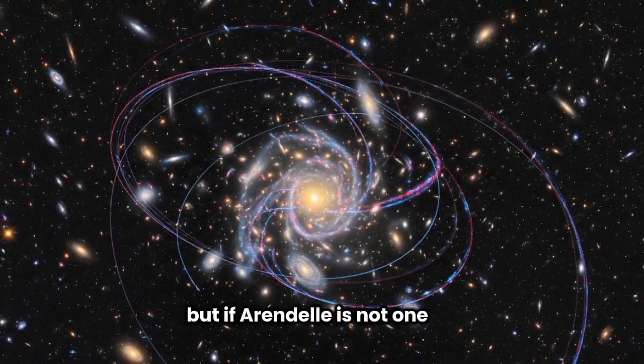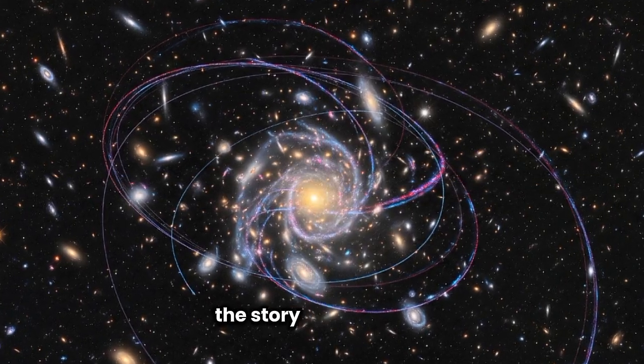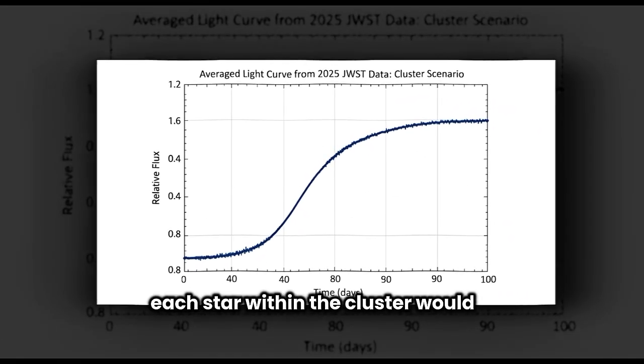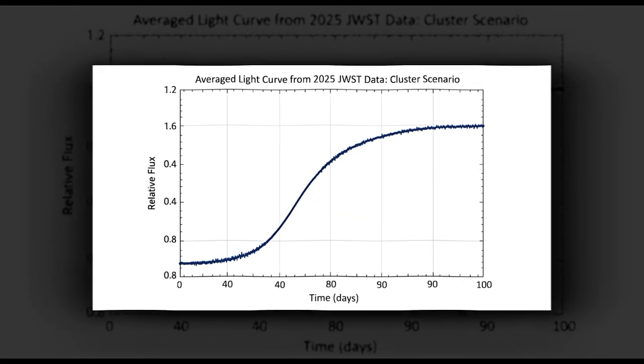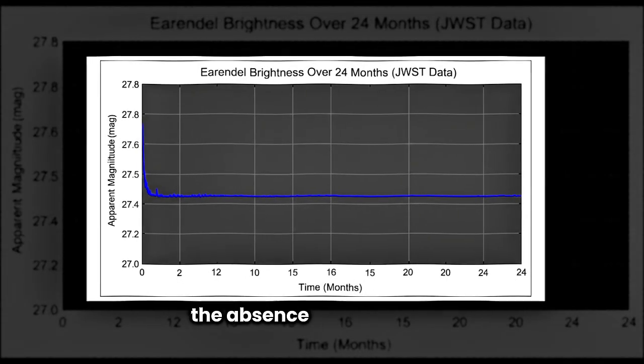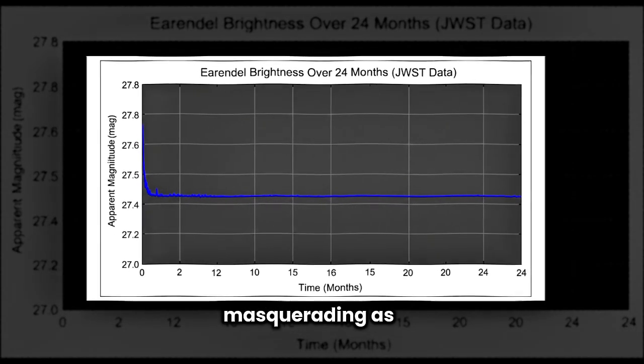But if Earendel is not one star, but a small cluster blurred together by the lens, the story looks different. In that case, each star within the cluster would be microlensed separately, and their combined light would average out into a steadier glow. The absence of sharp flickers would be the telltale sign that we're looking at a crowd of stars masquerading as one.